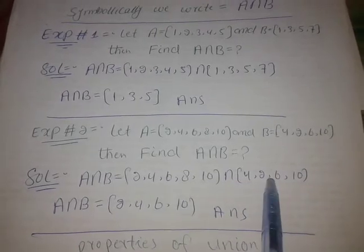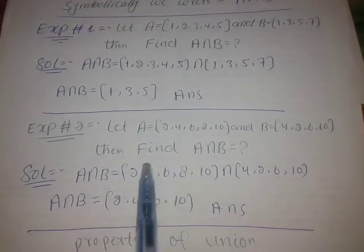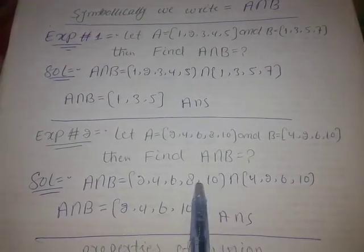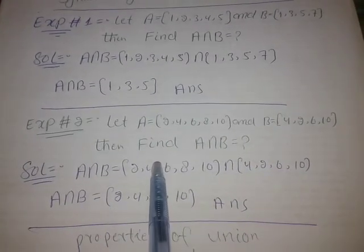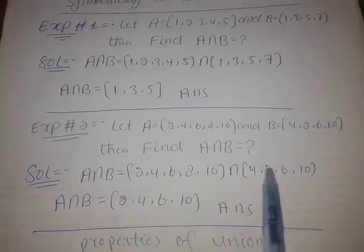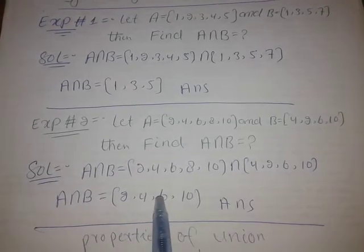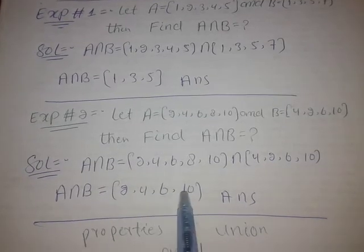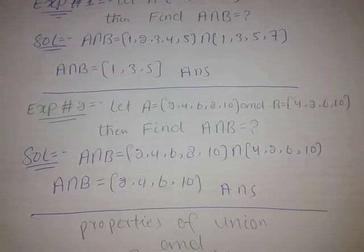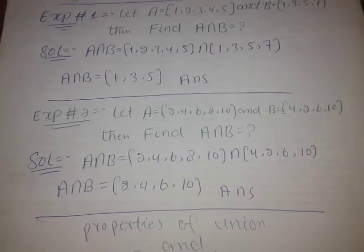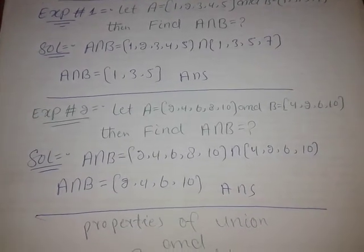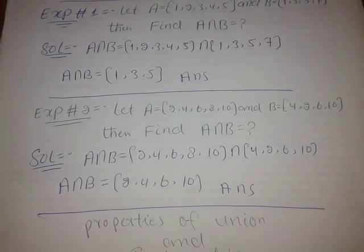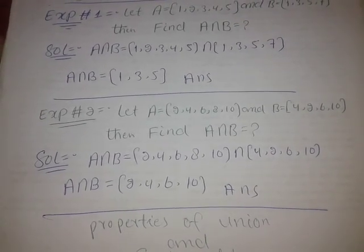The intersection gives us the common elements of the sets. The intersection of sets A and B contains only those elements found in both. We will also discuss the union and intersection, and next we will discuss the properties of intersection.